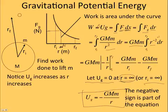Notice the potential energy increases as r increases, and so when I go from here to here, I end up with a smaller negative number. So maybe here it was -1000, and then up here it's -500.